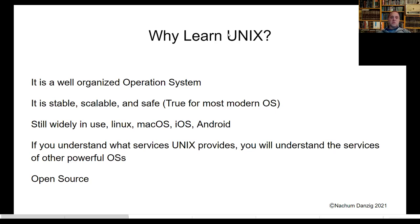Furthermore, if you understand Unix and what services it provides, you'll understand the services that other powerful operating systems provide — they have all copied the features that Unix provides. So if you learn Unix, you'll learn the concepts for all the other serious operating systems you may encounter. Another big advantage of Unix is that it's open source, which means you can actually modify the kernel — the essence of the operating system. With Windows, you can only get the compiled version and can't change it. But with Unix, you can get the open source version, change it, and create your own version of the operating system.